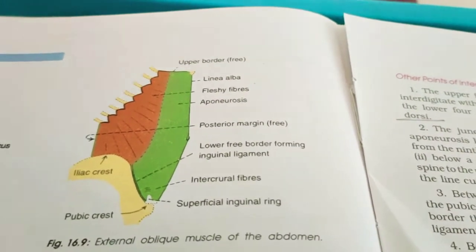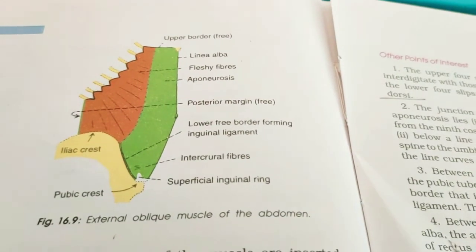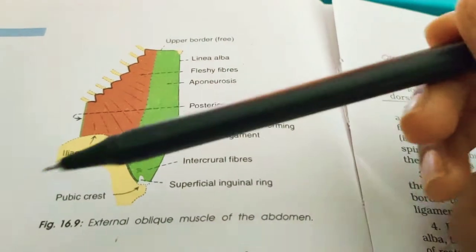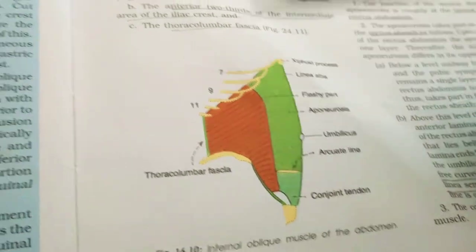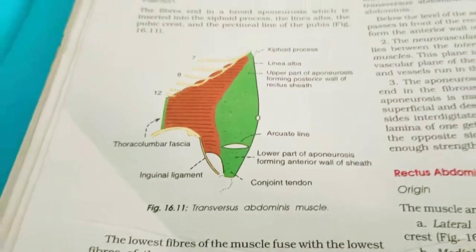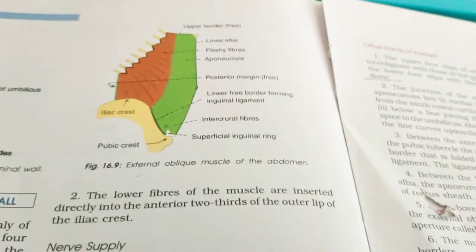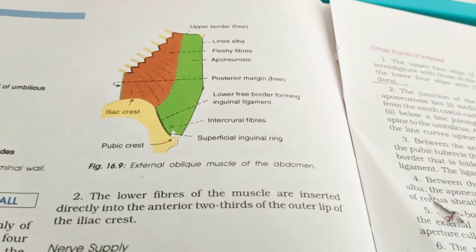Today we are going to start the muscles of the anterior abdominal wall. Mainly you have three muscles which are flat muscles: the external oblique muscle, the internal oblique muscle, and the transversus abdominis. If you see these three muscles, they look alike — they are all flat muscles. Let us differentiate them by means of nerve supply, actions, origin, and insertion.